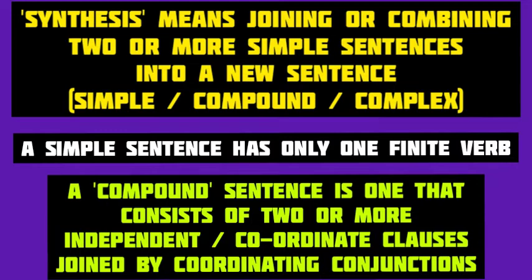A simple sentence is one that has only one finite verb, while a compound sentence consists of two or more independent or coordinate clauses which are joined by coordinating conjunctions. So in synthesis, two or more simple sentences are combined to form a new compound sentence.